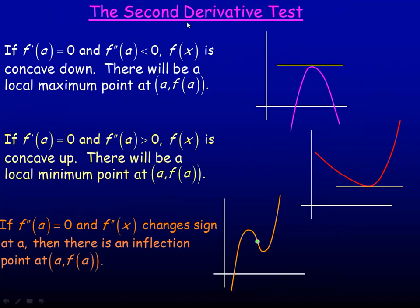Flipping over to the second page — this is what's called the second derivative test. It's used to determine where you might have a local maximum point or a local minimum point. If you have a curve with a horizontal tangent at point a, so f prime of a equals zero, and the second derivative is negative — less than zero — so the tangents are above the curve, then the function is concave down. If you have a place where it's concave down and the first derivative equals zero, there would be a local maximum point at the point a comma f of a.